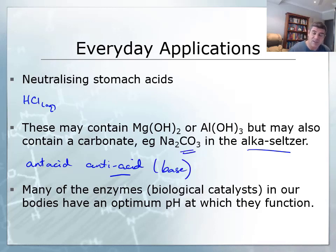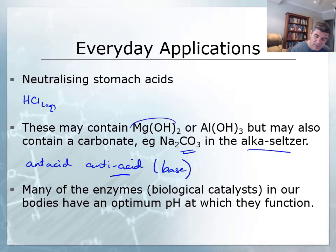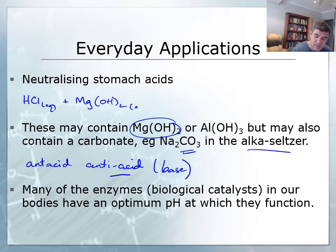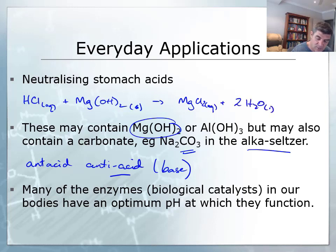For some antacids, carbon dioxide is also a product. If a key component is a carbonate or hydrogen carbonate such as sodium bicarbonate, it will produce carbon dioxide as well as water. If we use magnesium hydroxide — which is contained in many antacid substances — we can write the equation: Mg(OH)₂ in solid or aqueous form reacts with HCl to form magnesium chloride in solution and two water molecules.